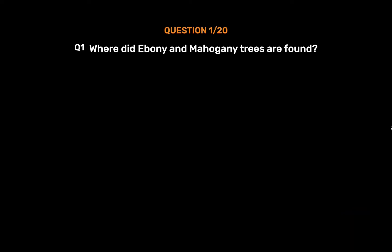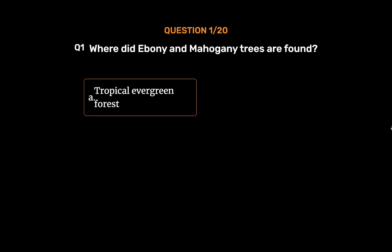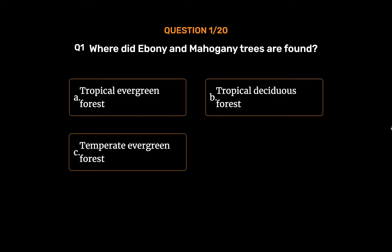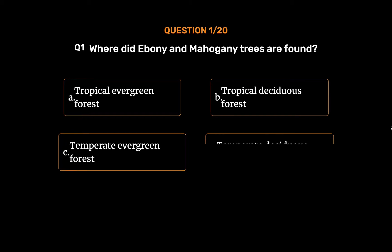Question number 1: Where are ebony and mahogany trees found? Option A: Tropical evergreen forest. Option B: Tropical deciduous forest. Option C: Temperate evergreen forest. Option D: Temperate deciduous forest. The correct answer is Option A: Tropical evergreen forest.